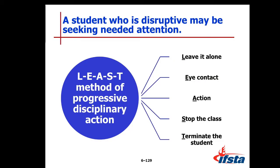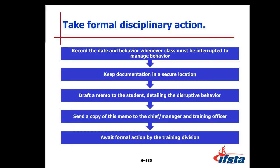A student who is disruptive may be seeking needed attention. So we have the least method of progressive disciplinary action. First time, leave it alone. Second time, make eye contact with the student. Third time, take action with the student. Fourth time, stop the class. And last, terminate the student. These are your formal disciplinary actions. Record the date and the behavior whenever class must be interrupted to manage behavior — jot that down in your attendance notes or on a separate sheet of paper, just in case you need it.